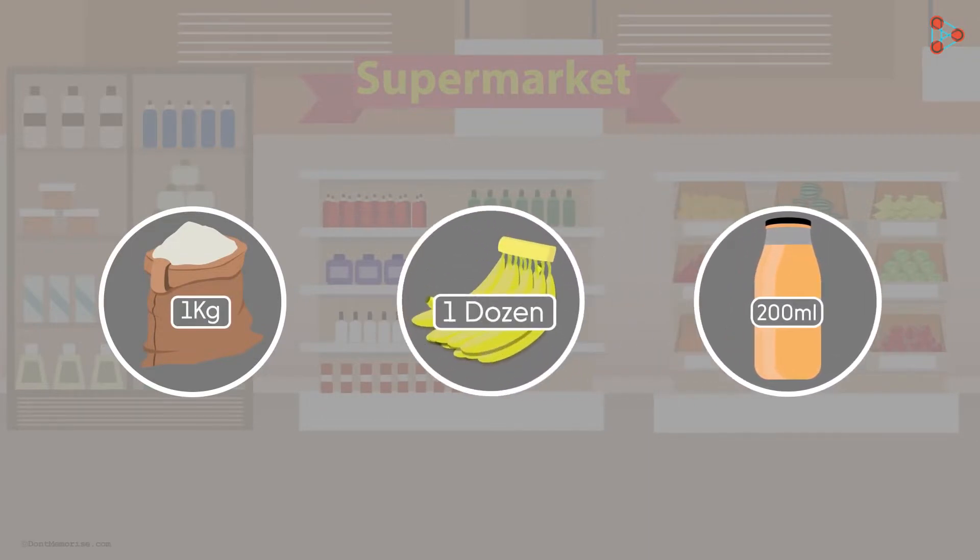Fruits are sometimes counted using the unit dozen. One dozen means 12 of something. These are terms used in everyday life.